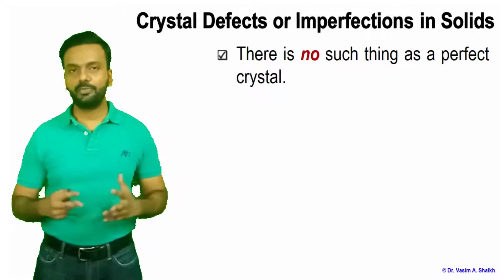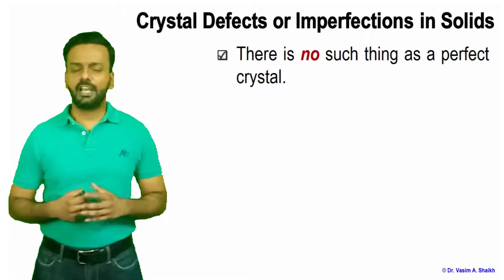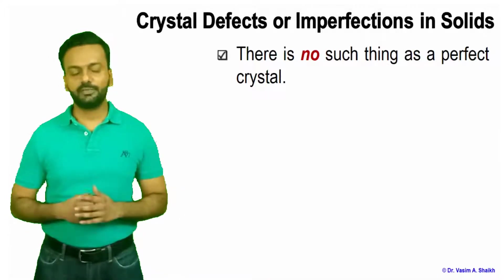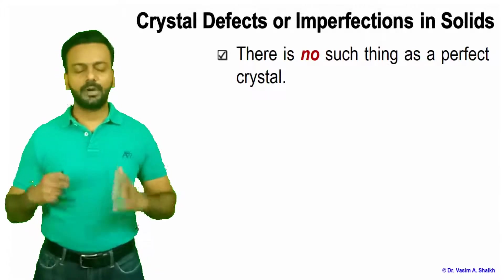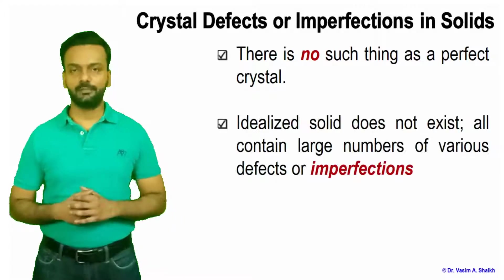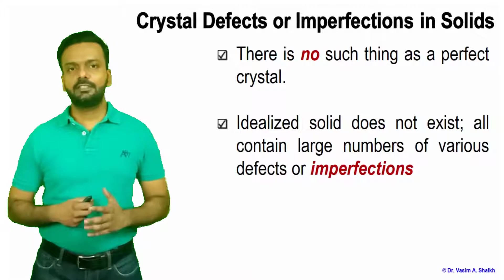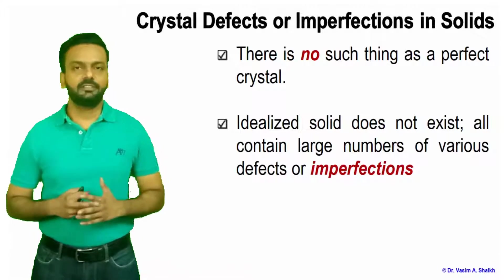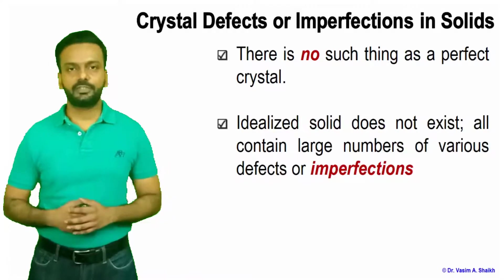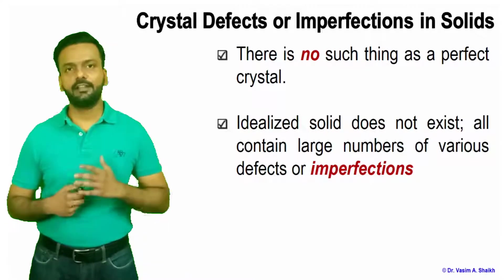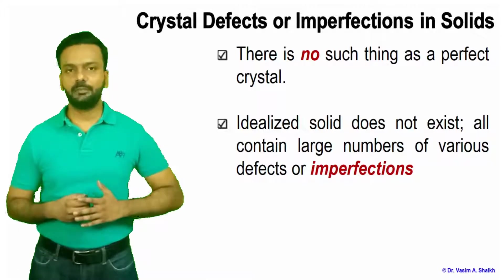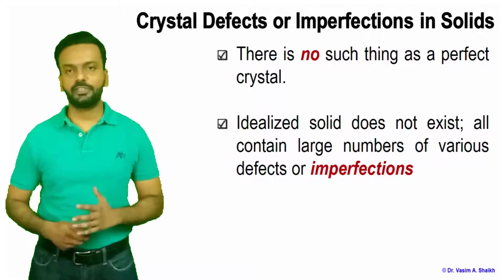Even if you take any pure material, it will have some defect or the other. So there is no such thing as a perfect crystal. Defects are bound to be there in the material and you can't get rid of them. Sometimes we deliberately put such defects in the material. No idealized solid exists — all contain some type of defects or imperfections.